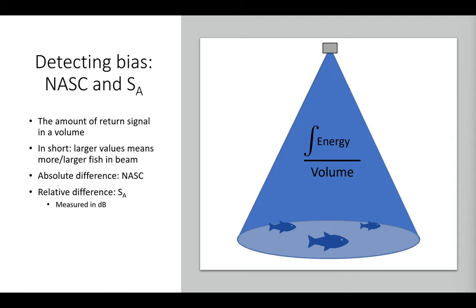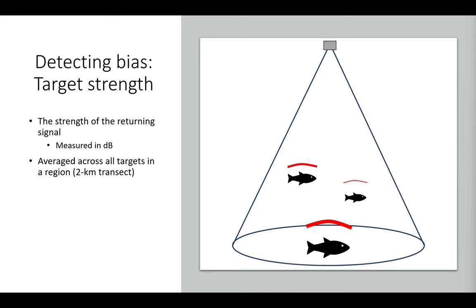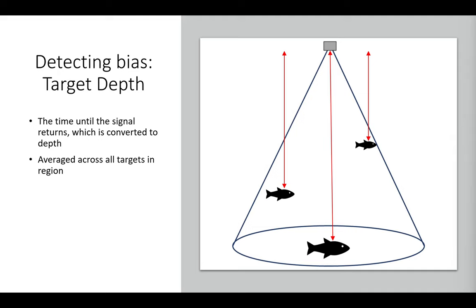What we decided to look at was a couple of different measures. We looked at NASC or SA — essentially the amount of energy returning to our transducer, which is related to how much biomass is under the vessel. One metric is whether the biomass we're measuring changes as vessels approach. We also looked at target strength — how strong and how large the targets were under the drone or vessel, and whether they changed. If targets suddenly get smaller, that suggests fish are pointing down or moving away. The third metric was target depth — if fish are moving, we should see changes in depth, presumably away from the vessel.